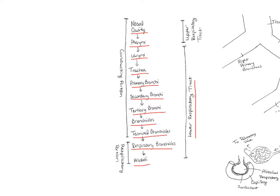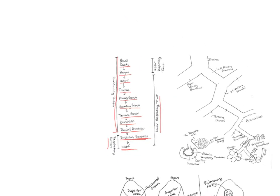We can also divide by the conducting portion and the respiratory portion. The conducting portion just means the part that brings air in and out — from the nasal cavity all the way down to the terminal bronchioles. The respiratory portion is where there can be exchange between the respiratory membrane, the alveoli, and the blood. The respiratory bronchioles and the alveoli are the only place where air can move between the respiratory system and the blood.